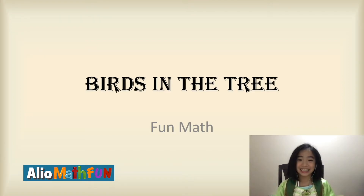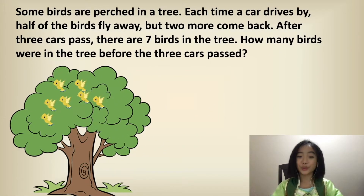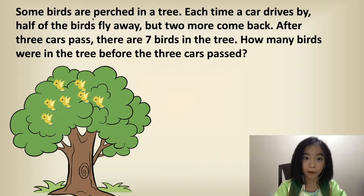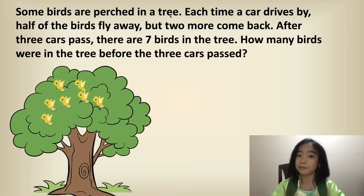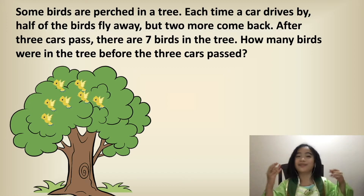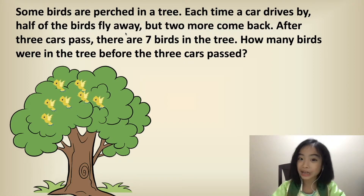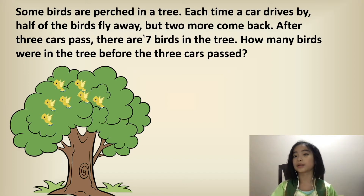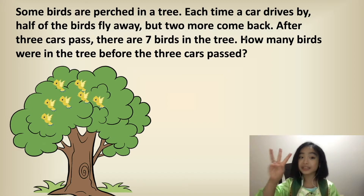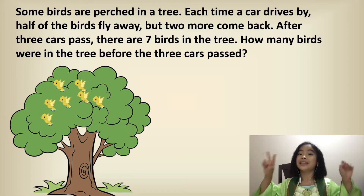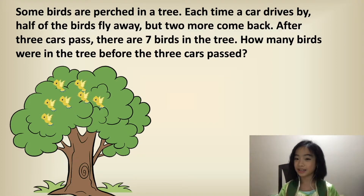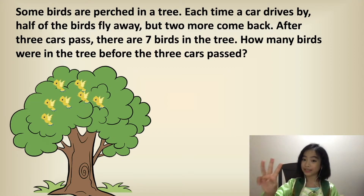Basically, it's about like a tree has birds in it. So the word problem is: some birds are perched in a tree. Perched in a tree means like resting in a tree. So each time a car drives by, half of the birds fly away, but two more come back. After three cars pass, there are seven birds in the tree. How many birds were in the tree before the three cars passed?